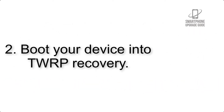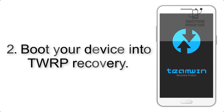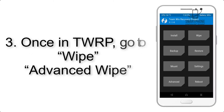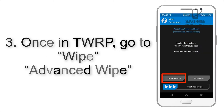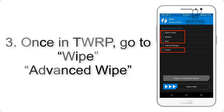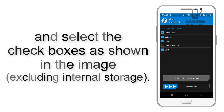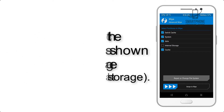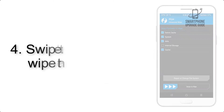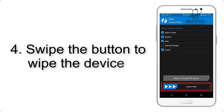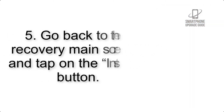Step 2: Boot your device into TWRP recovery. Once in TWRP, click on Wipe, then Advanced Wipe, and select the checkboxes as shown in the image, excluding internal storage. Step 4: Swipe the button to wipe the device.